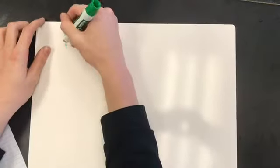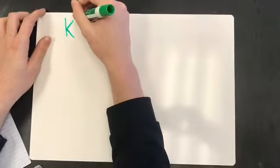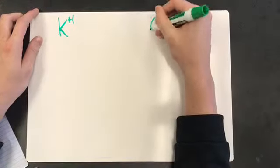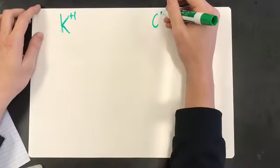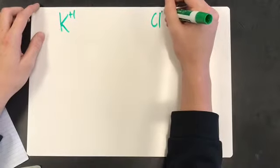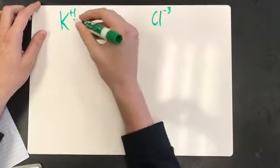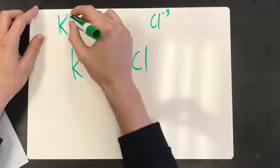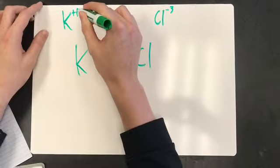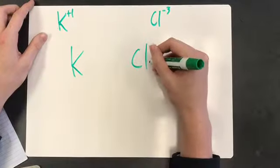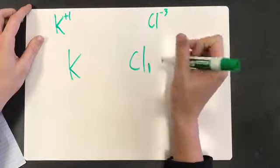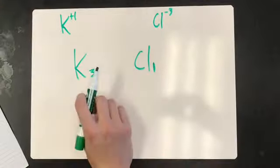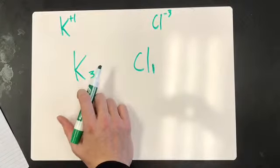Today we are going to do potassium with a plus 1 charge and chlorine with a negative 3 charge. We are going to take this down here. So you take the plus 1 and bring it down to chlorine, and then the negative 3 is just going to make the charge. That is potassium chloride.